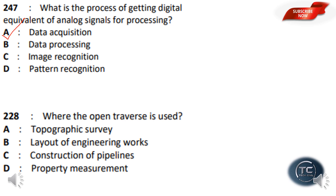Which is a unique application? The options are: Topographic Survey, Layout of Engineering Works, Construction of Pipelines, Property Measurement. The answer is the Construction of Pipelines. Open Traverse will be discussed — it starts at a point and ends at a different point, meaning it is not closed.